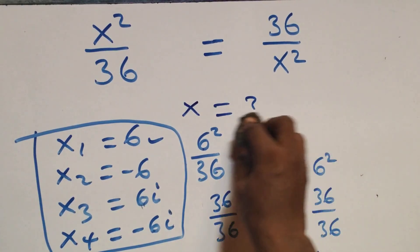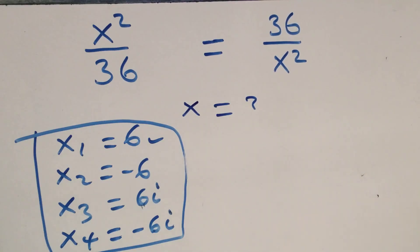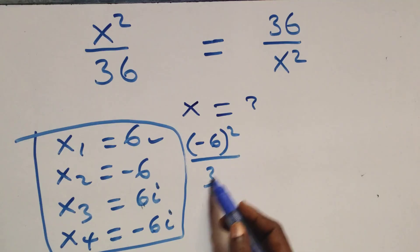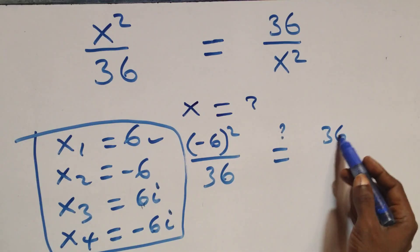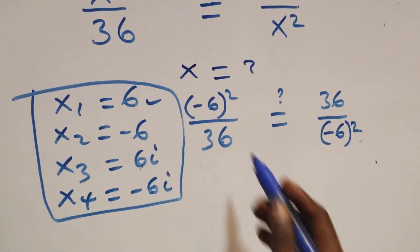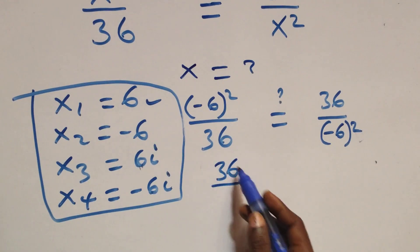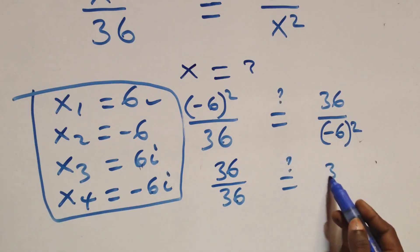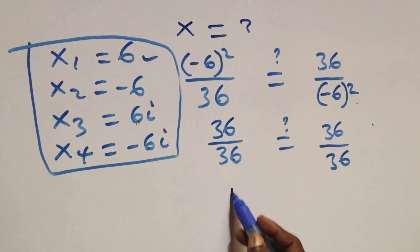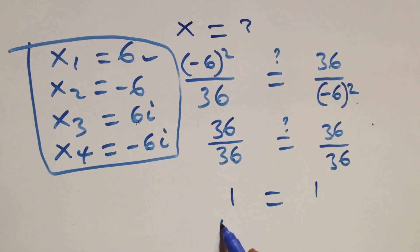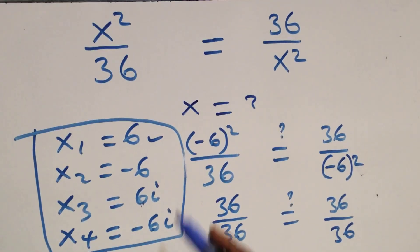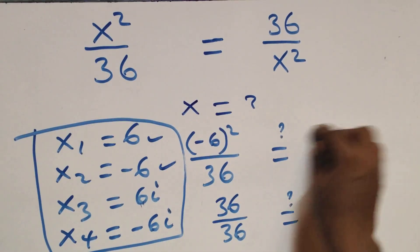When x = −6, the equation becomes (−6)² over 36, and (−6)² = (−6) × (−6) = 36, so we get 36/36 = 1 on the left. On the right we have 36 over (−6)², which is also 36/36 = 1. Left-hand side equals right-hand side, so x = −6 satisfies the given problem.